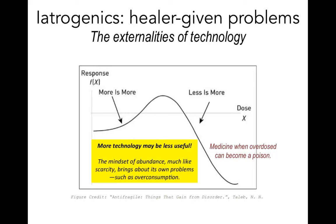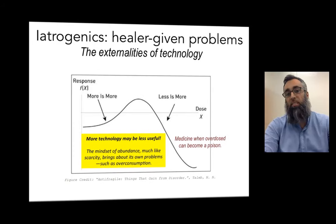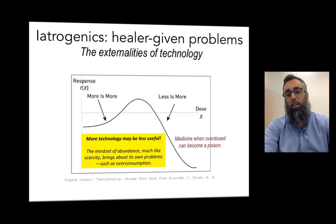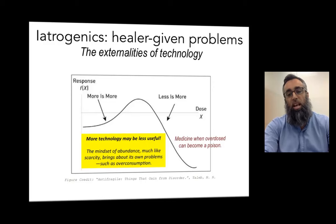The take-home message from iatrogenics is that more technology may actually be less useful. Abundance and having a lot of resources can be counterproductive — for example, humanity has never been richer as a collective but has also never been in more debt. We posit that the same thing is happening in networking: we are over-consuming our resources and can do much better by scaling down on the complexity of our systems.